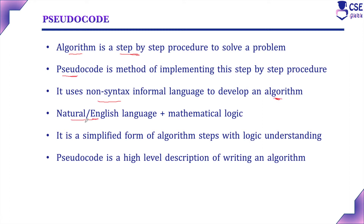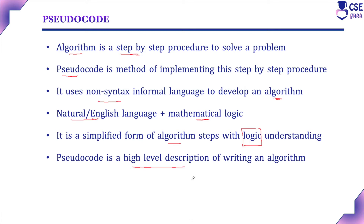Pseudocode consists of natural language or English language with mathematical logic specified clearly. It is a simplified form of algorithm steps with logic understanding. In pseudocode, the logic part is specified very clearly. So pseudocode is a high-level description of writing an algorithm — a procedure to write or implement the algorithm.